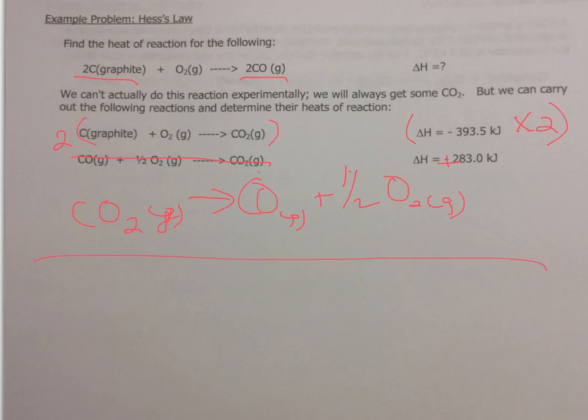So now if I take a look at my equation, I have two carbons in the form of graphite plus I have two oxygens here and two carbon dioxides here. So let's take a look here. I have a half of oxygen here. Well, that's not going to work out very well, is it? The other thing I notice is I need two carbon monoxides. So I'm going to have to multiply this whole thing by two also.